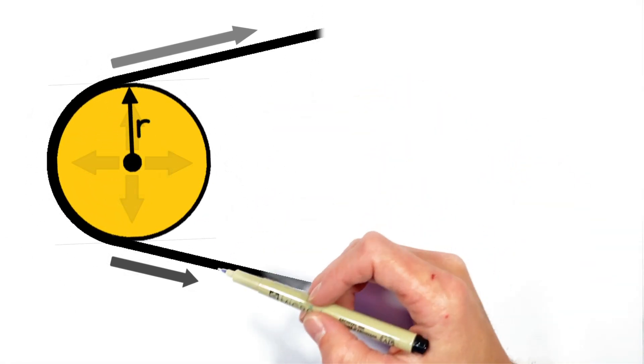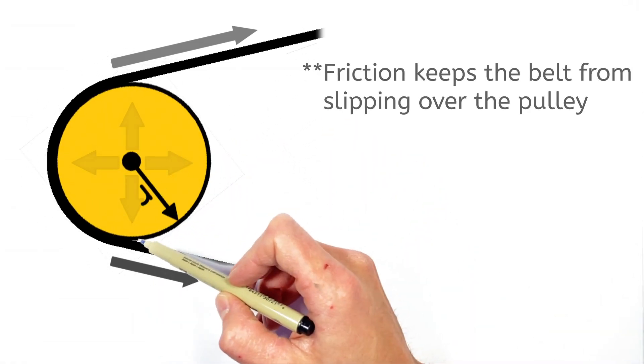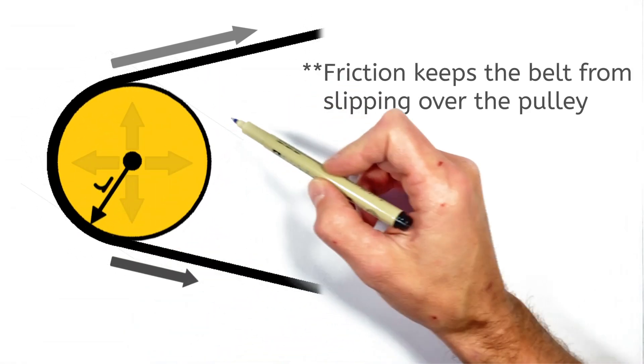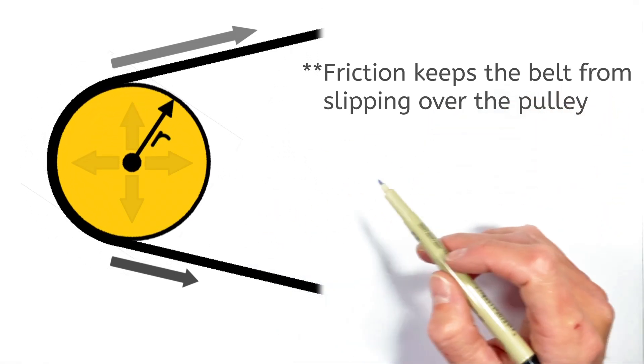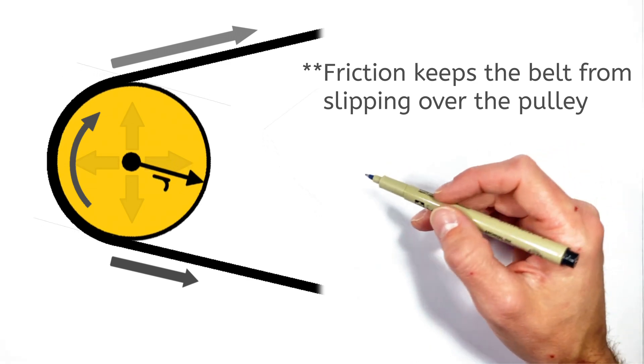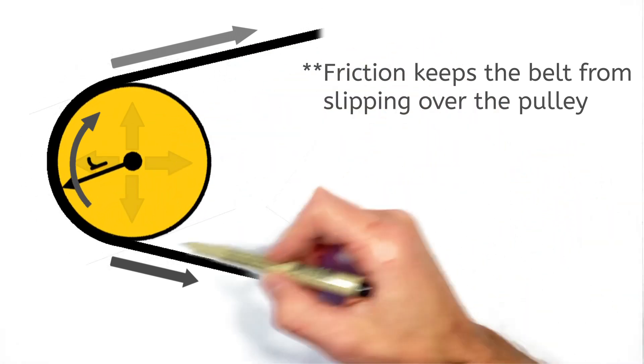See, what's really happening in the case of our belt and pulley system here is it's friction that keeps the belt from slipping over the pulley. Now you might think that friction is a bad thing, but here the friction between the belt and the pulley is really what's transferring the force by the belt into the pulley.